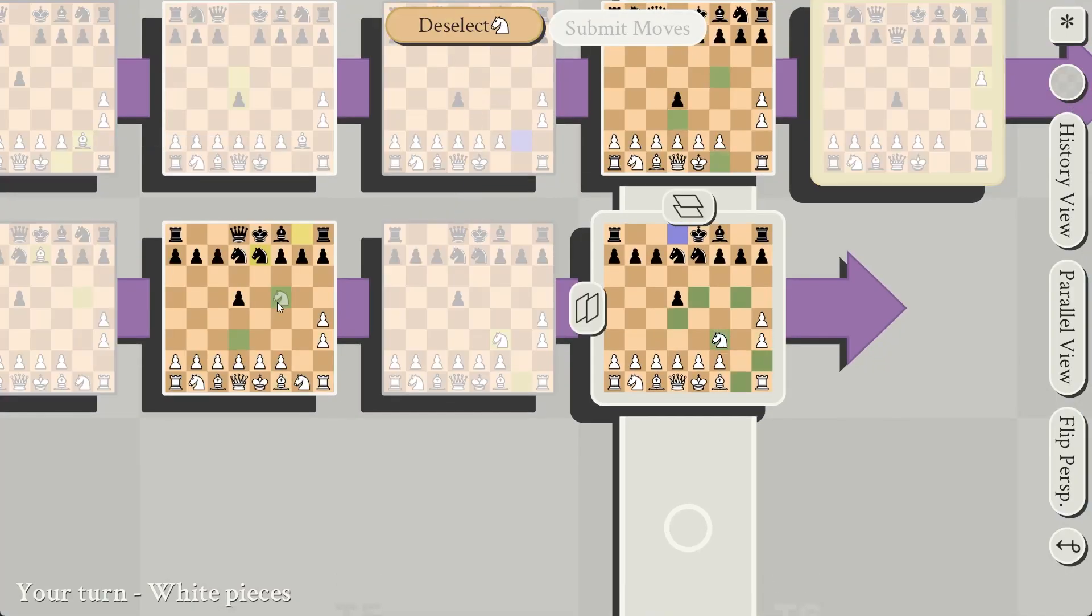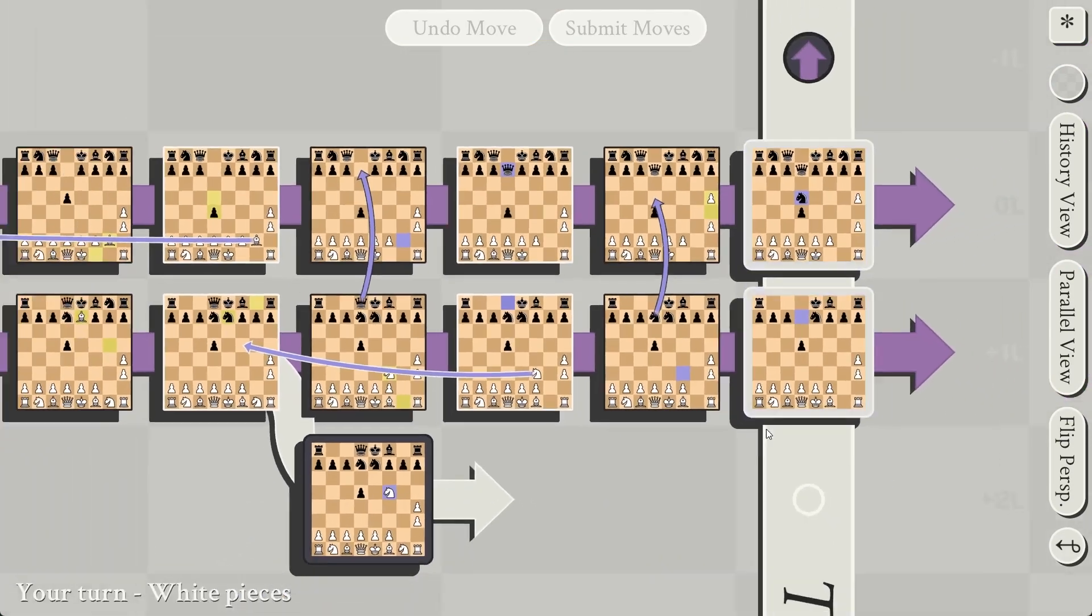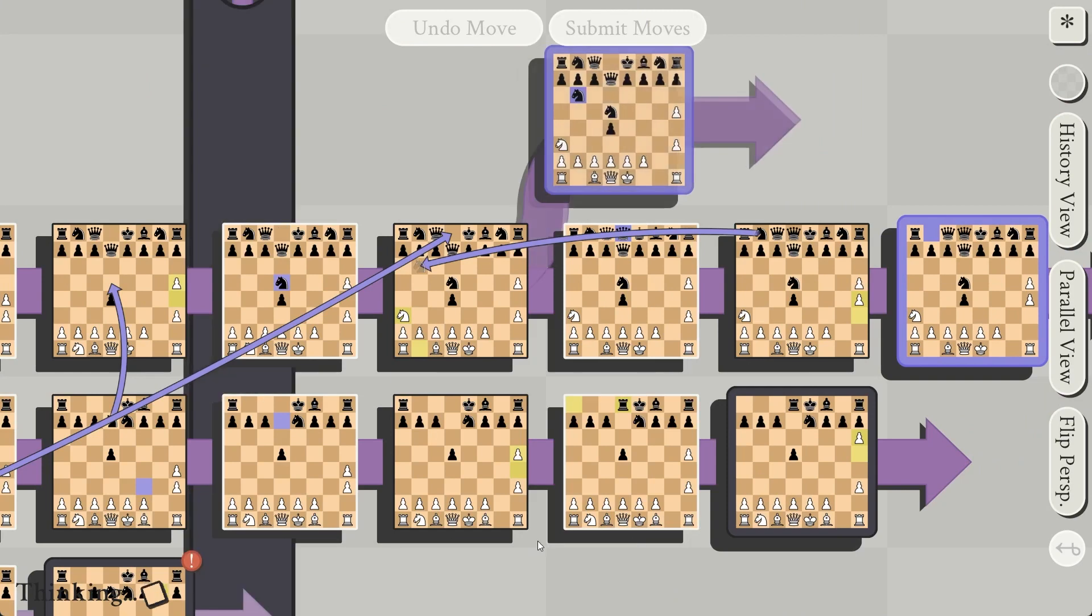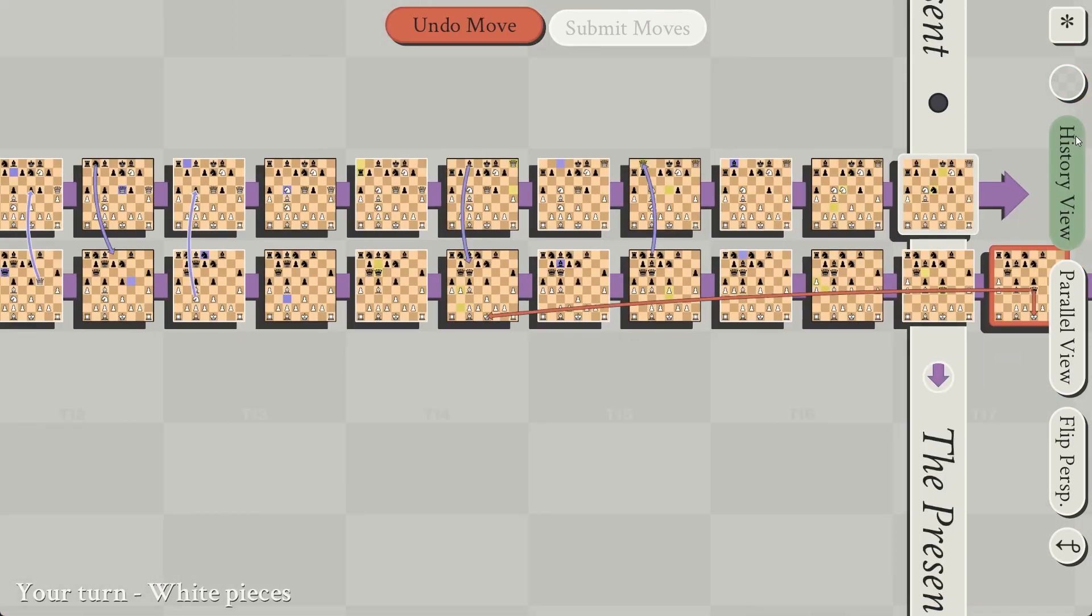The reason you can't time travel unlimitedly is because you can only have one timeline more than your opponent. Once you make too many timelines, they will not be active timelines until your opponent makes new timelines to balance them out. So you don't have many chances to do this whole time traveling out of check thing.